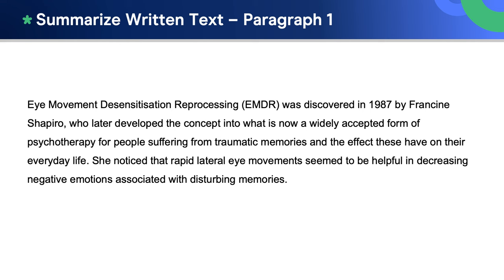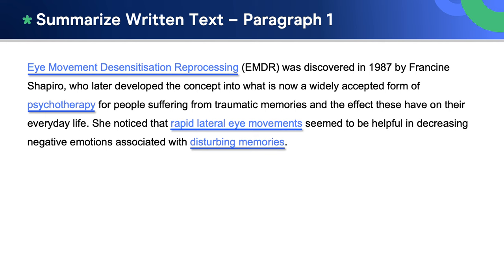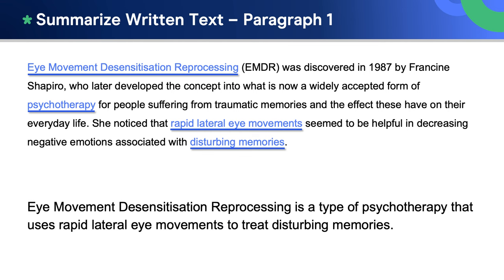Let's now summarize the text together. Here is the first paragraph of the text. Let's remove everything except the key words. They are: eye movement desensitization reprocessing, psychotherapy, rapid lateral eye movements, and disturbing memories. And now let's join them to make a simple sentence summary of the paragraph: eye movement desensitization reprocessing is a type of psychotherapy that uses rapid lateral eye movements to treat disturbing memories.